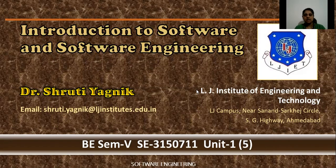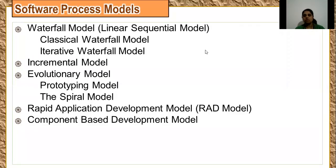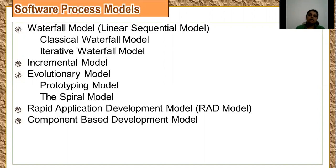Hello all, this is the last lecture of Unit 1 of software engineering. We were discussing the software process models. We are on the incremental model. The incremental model is used nowadays and development still takes place using this model. Sometimes there is a compelling need to provide a limited set of software functionality to users quickly, then expand on other functionalities in later releases. Hence, we choose to produce and deliver in an incremental fashion.